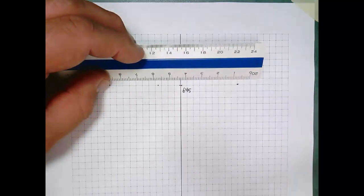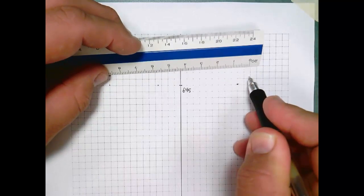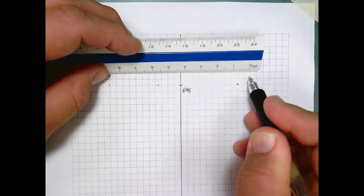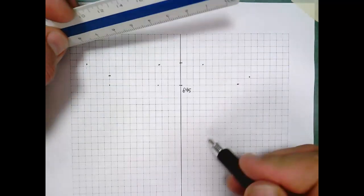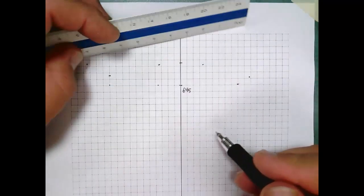Remember, vertically every square is 2 feet high. But horizontally, we're using a 1 inch equals 20 foot scale. So now I'm at 43 feet right, and I have plotted 647.5.